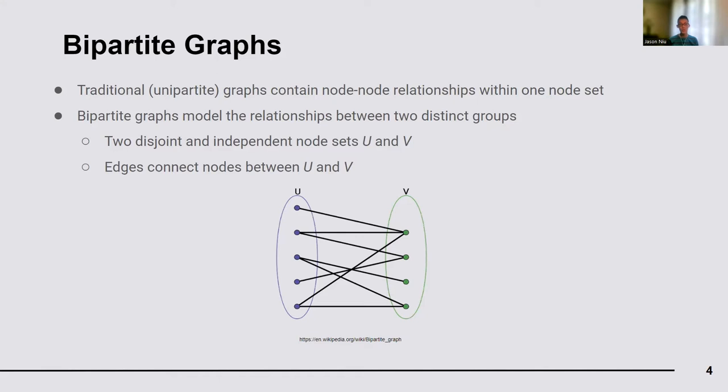For example, an author-paper network is a bipartite graph where each edge connects an author with a paper. The author is a co-author of that paper.